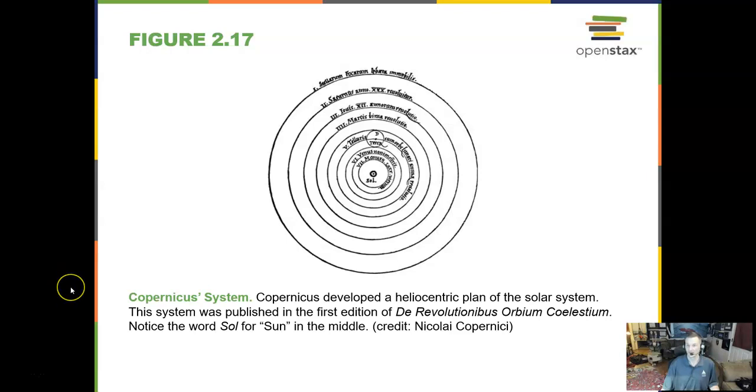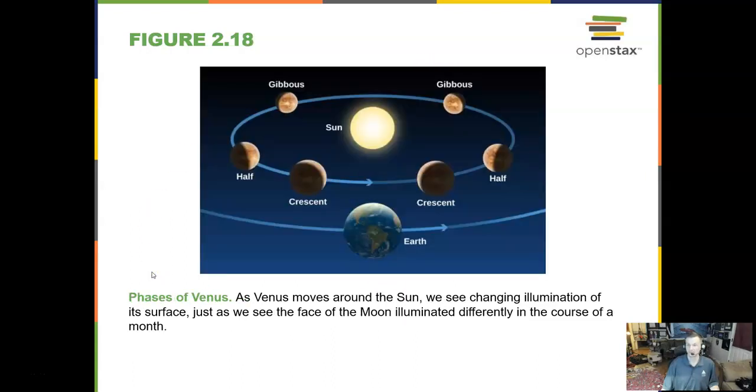So in Copernicus's system, the sun is at the middle and everything orbits around that sun. We can also see the phases of Venus. Venus does go through phases, but it's not quite the same as what the moon goes through, but it's similar. And we can see this by looking at Venus in a telescope in the night sky or the early morning or early evening hours. And you can see a little bit or a lot lit up depending on what phase it's in.